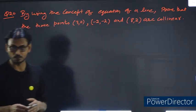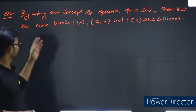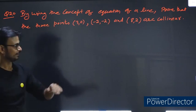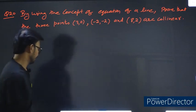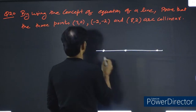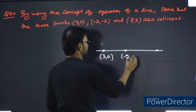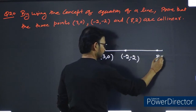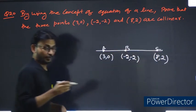By using the concept of equation of a line, prove that three points are collinear. The three points are A(3,0), B(-2,-2), and C(8,2). This is A, this is B, and this is C.